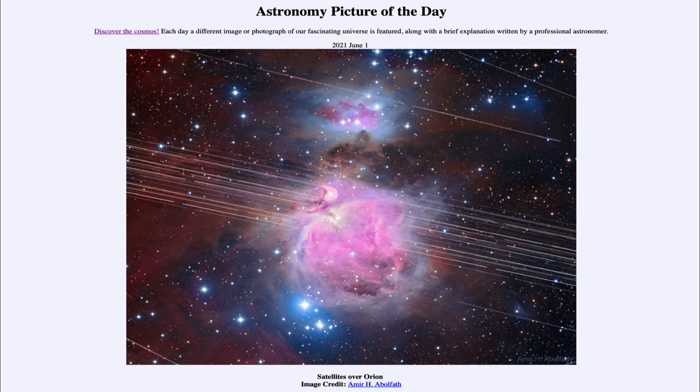So here we see an example of that with a number of satellites going through the constellation of Orion and the Orion Nebula. Now, as noted here, I've mentioned Starlink, but these are not Starlink satellites. These are actually satellites in very high orbit, but the process and the concerns are still similar.